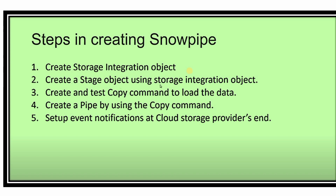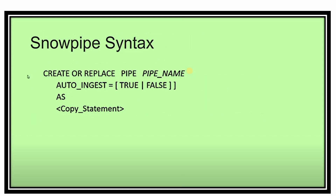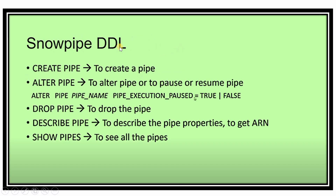The syntax for creating a Snow Pipe is: CREATE OR REPLACE PIPE pipe_name AUTO_INGEST = TRUE AS COPY INTO table_name FROM stage_name. The AUTO_INGEST = TRUE parameter means that whenever a data file is uploaded to the external stage, it will automatically be loaded into the Snowflake table via the event notifications and exchanged ARNs.